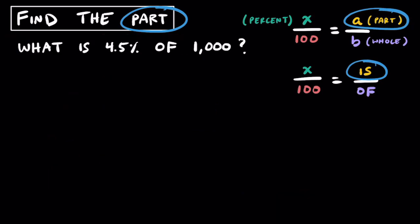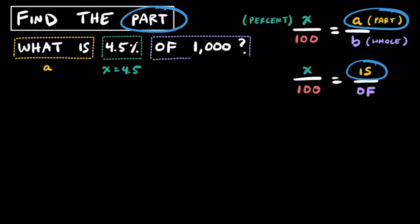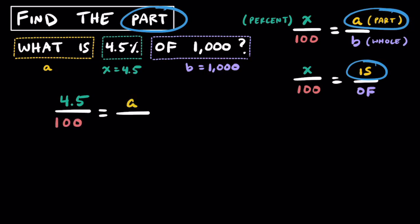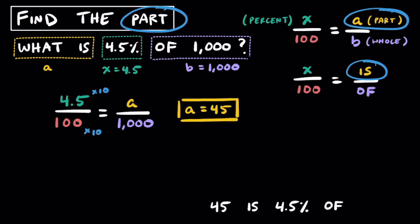Let's try another one: What is 4.5% of 1000? 'What is' is our unknown a, 4.5% means x equals 4.5, and 'of 1000' means b equals 1000. Our proportion is 4.5 over 100 equals a over 1000. Since 100 goes into 1000 exactly 10 times, a equals 4.5 times 10, which is 45. So 45 is 4.5% of 1000.